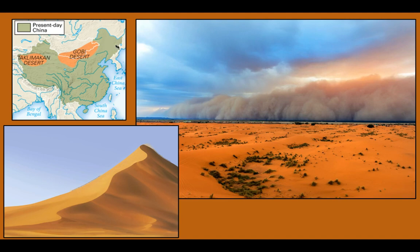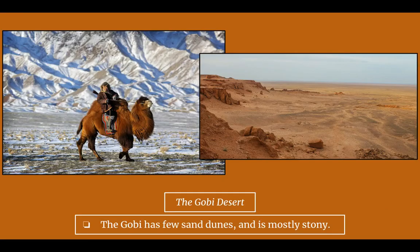The Gobi Desert has few sand dunes and is mostly stony. There are sand dunes, but they're not as prevalent in the Gobi versus the Taklamakan Desert.